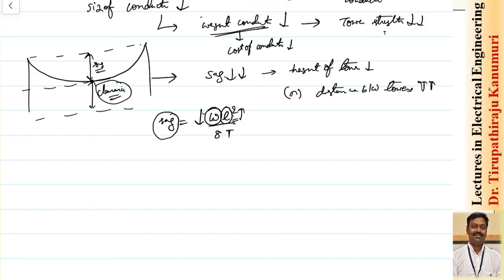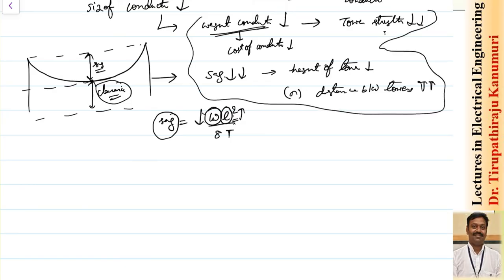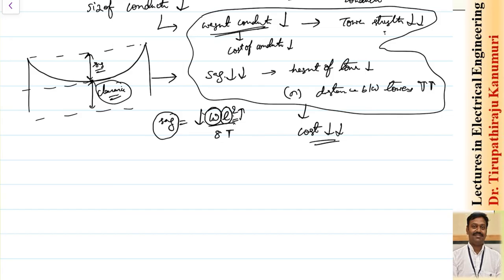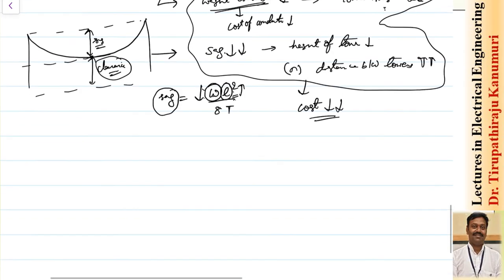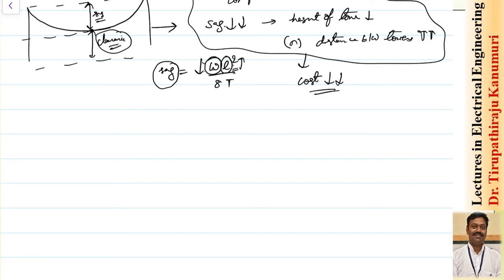Summarizing, if we decrease the size of the conductor, the initial investment decreases drastically. There is another parameter that decides cost — the insulation, which depends on the voltage. For now, we assume the voltage and electrical stress on insulation are the same in all cases; we will compare these systems first and then discuss the effect of voltage on the economical design in later topics.